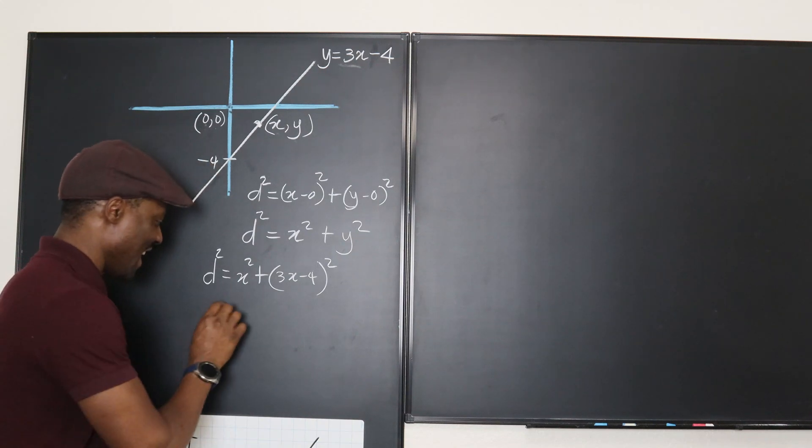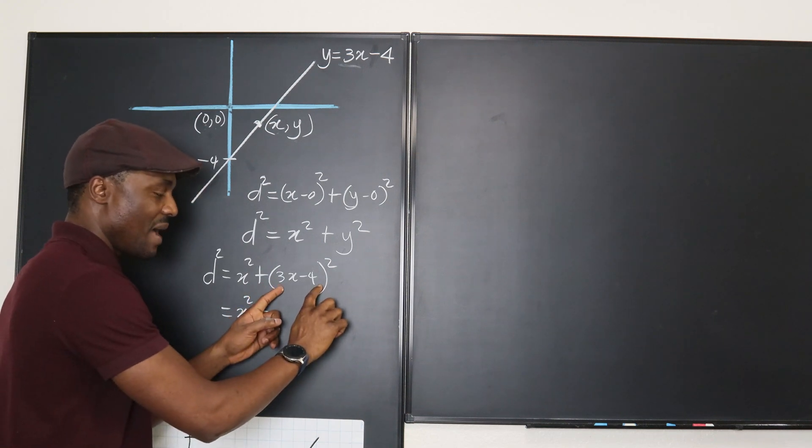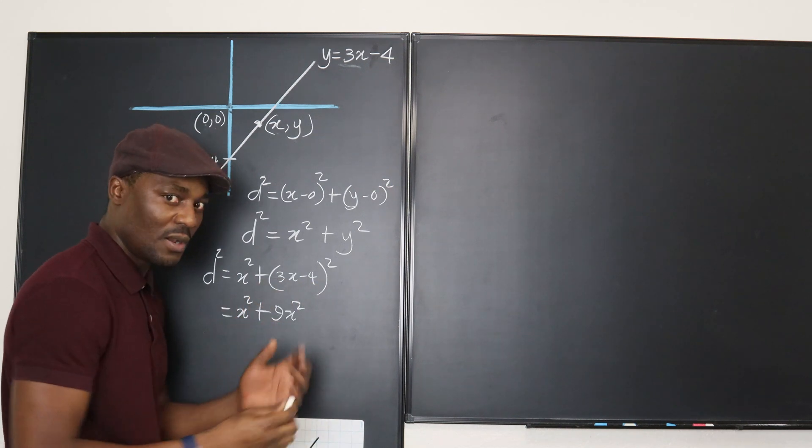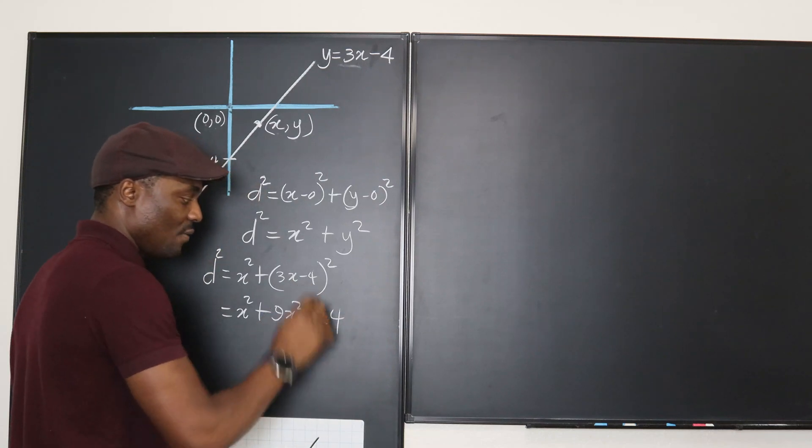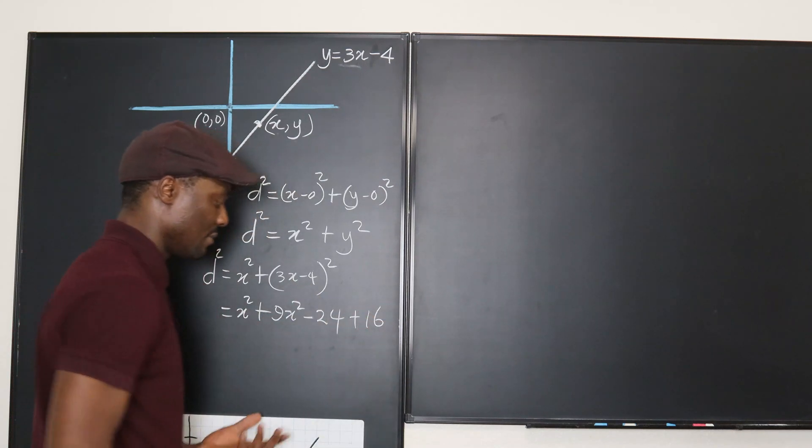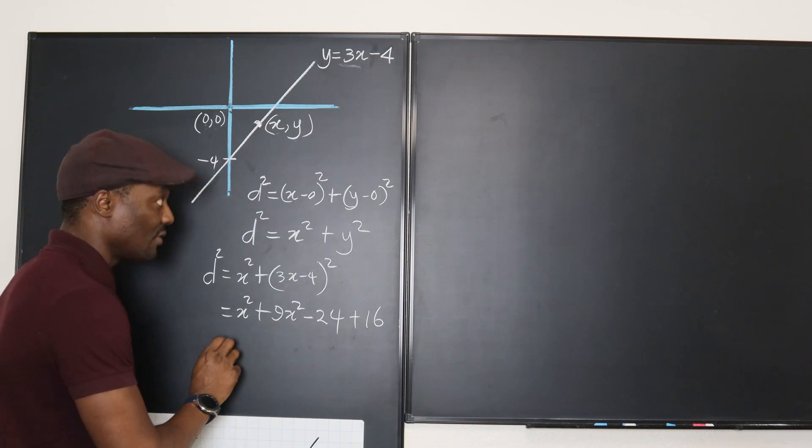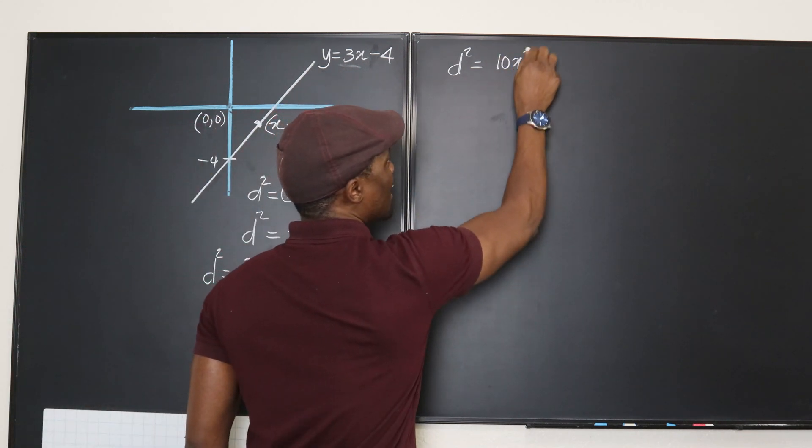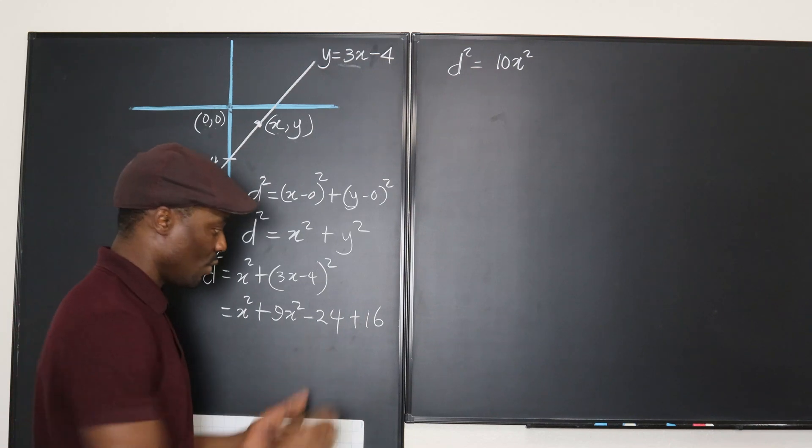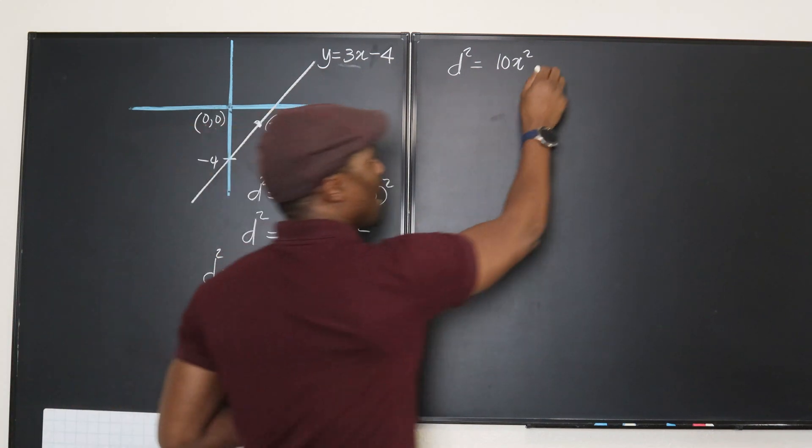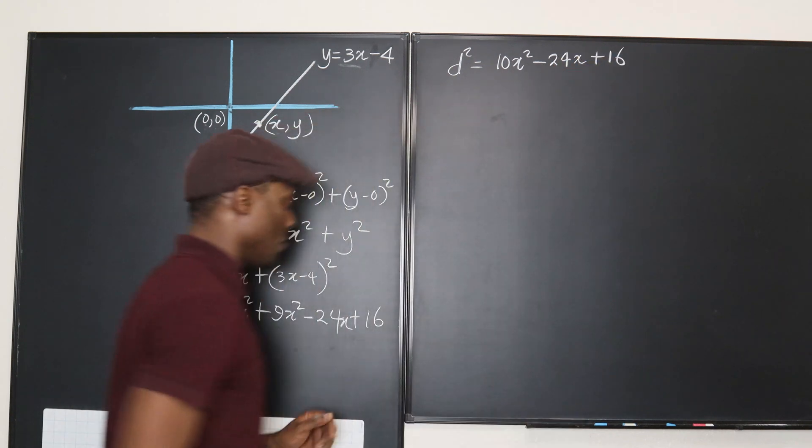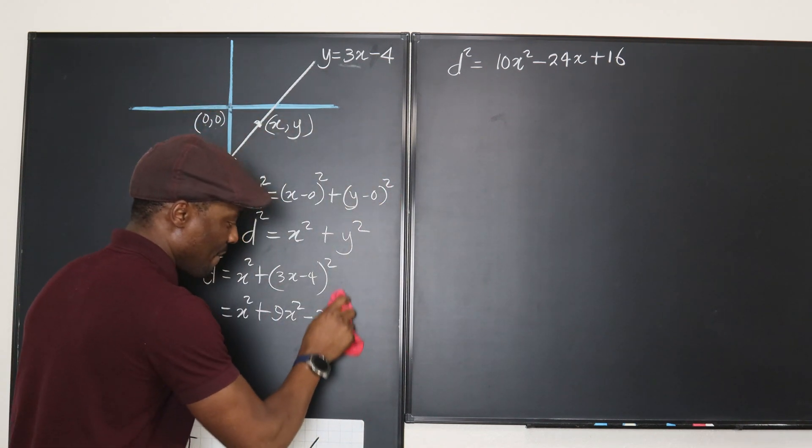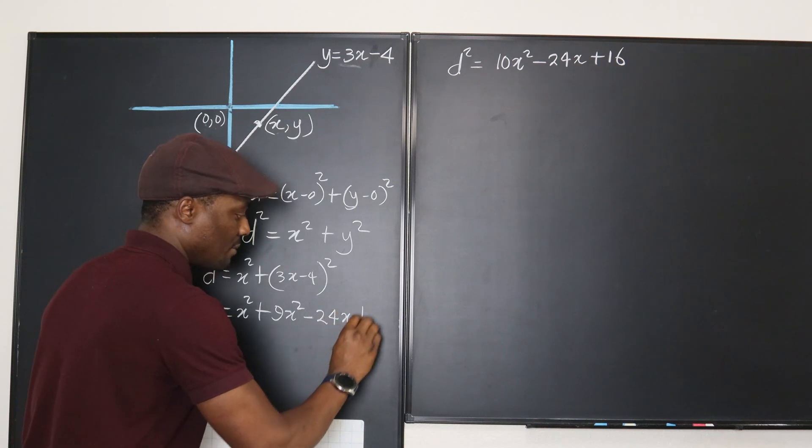It's going to be d squared equals x squared plus 3x minus 4 squared. It's getting beautiful. So this is going to give me x squared plus, if I expand this, this is going to be the square of this which is 9x squared. And if you multiply 4 by 3, you get 12 and that's going to happen twice. So that's negative 24 and negative 4 times negative 4 is plus 16. And we can put these together which tells us that d squared will be equal to 10x squared negative 24x plus 16. Don't forget to put the x, otherwise it's absolutely wrong. I'm just going to rewrite this. That's 24x plus 16.